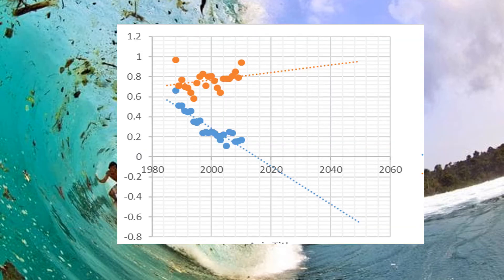In this scatter dot plot, it shows two graphs: the orange indicating the use of plastic per year and the blue indicating industrial plastic per year, showing the rate of increase from 1985 to 2010. The orange is a positive correlation with a strong relationship, and the blue has a negative correlation with a strong relationship.